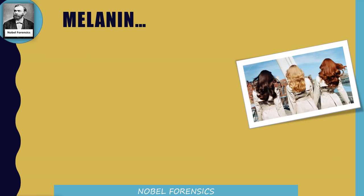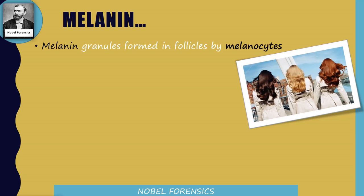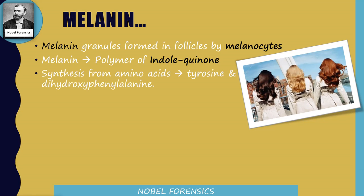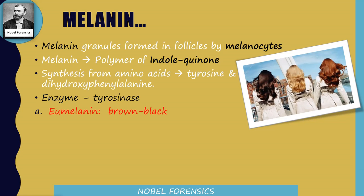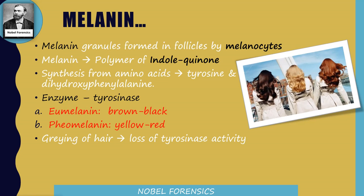Melanin gives color to the hair. Eumelanin and pheomelanin give different colors to the hair. Melanin granules are formed in follicles by melanocytes. Melanin is a polymer of indolquinone — indolquinone is the monomer and melanin is the polymer. It is synthesized from amino acids tyrosine and dihydroxyphenylalanine, with the action of the enzyme tyrosinase. If tyrosinase activity stops, melanin production will stop and hair will lose color and become gray. Graying of hair means loss of tyrosinase activity. Usually beard hair turns gray first, and body hair turns gray last.